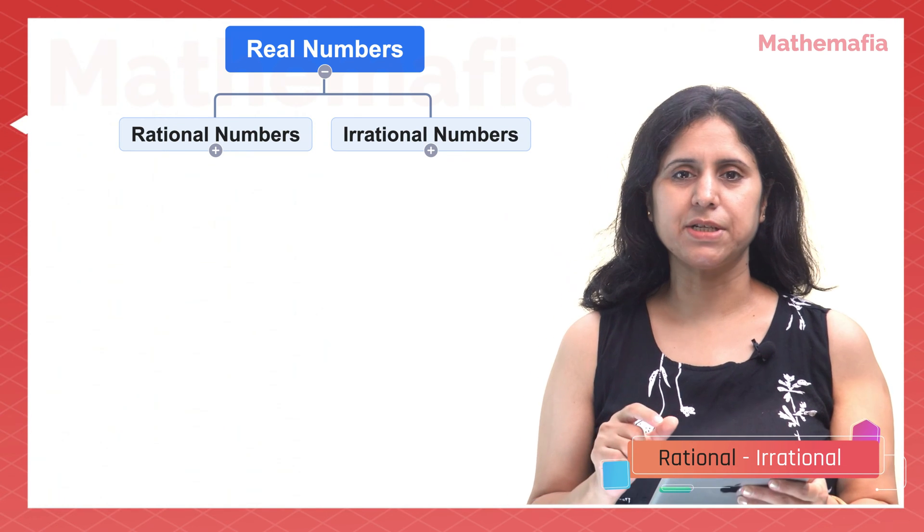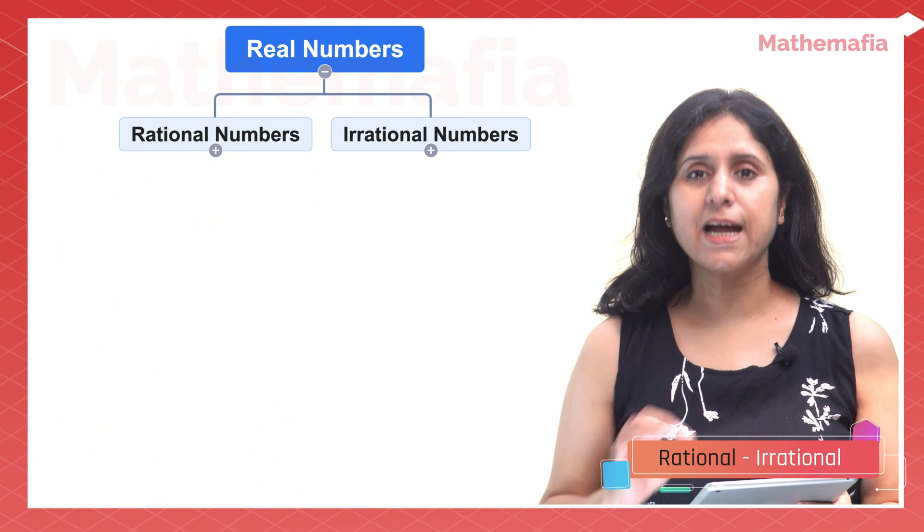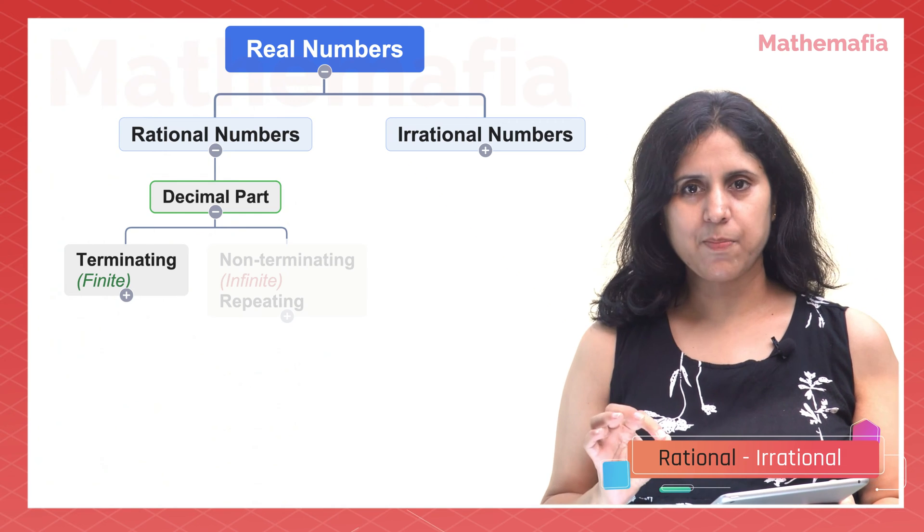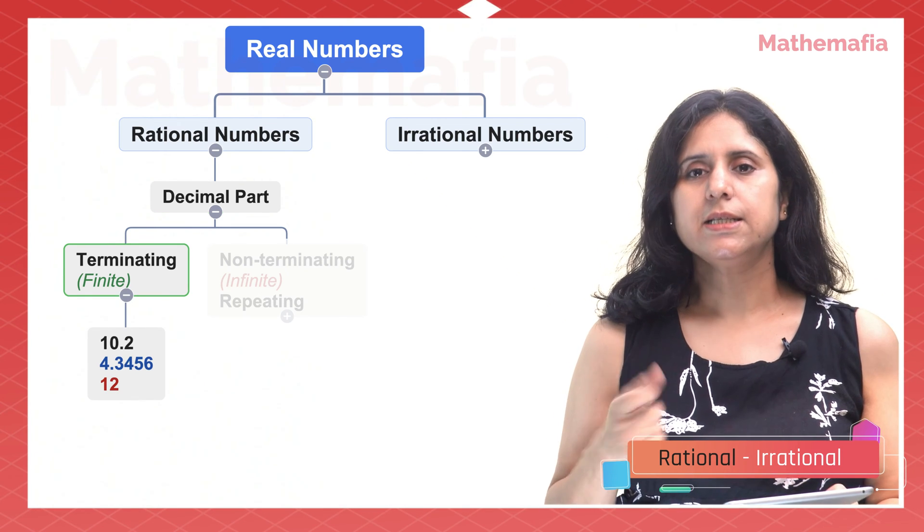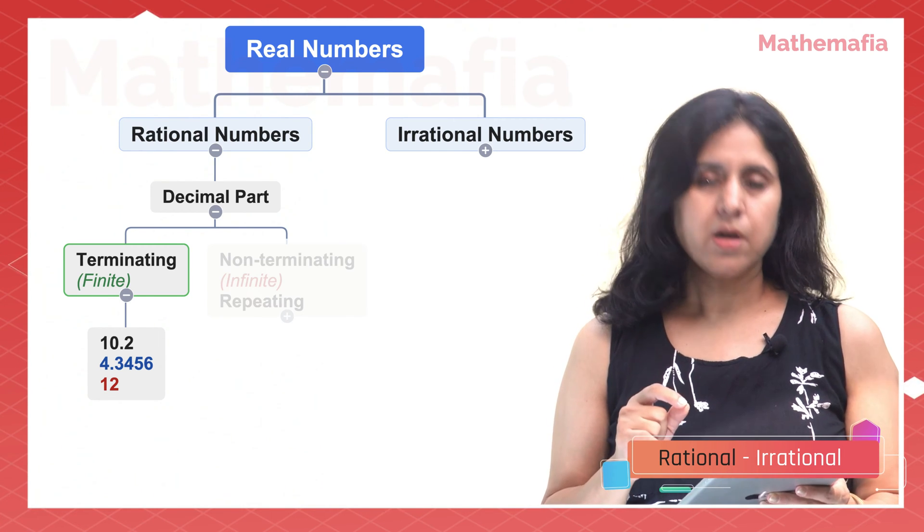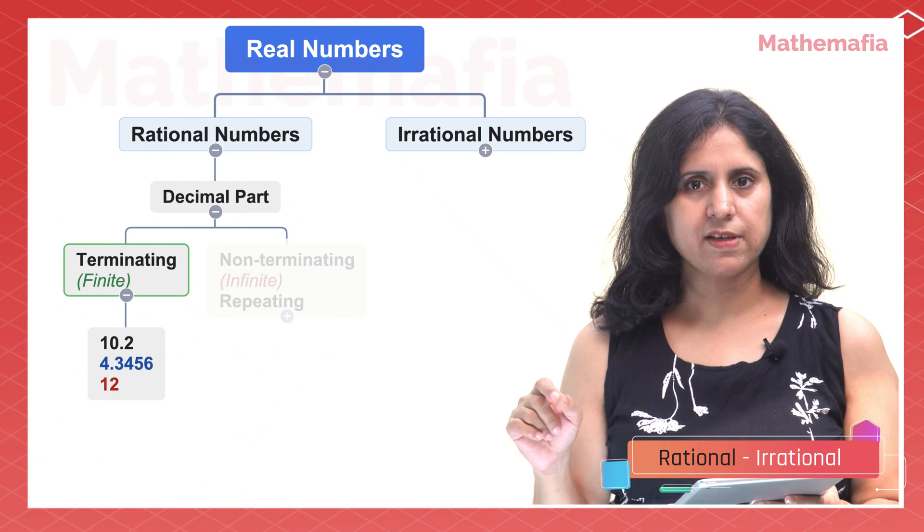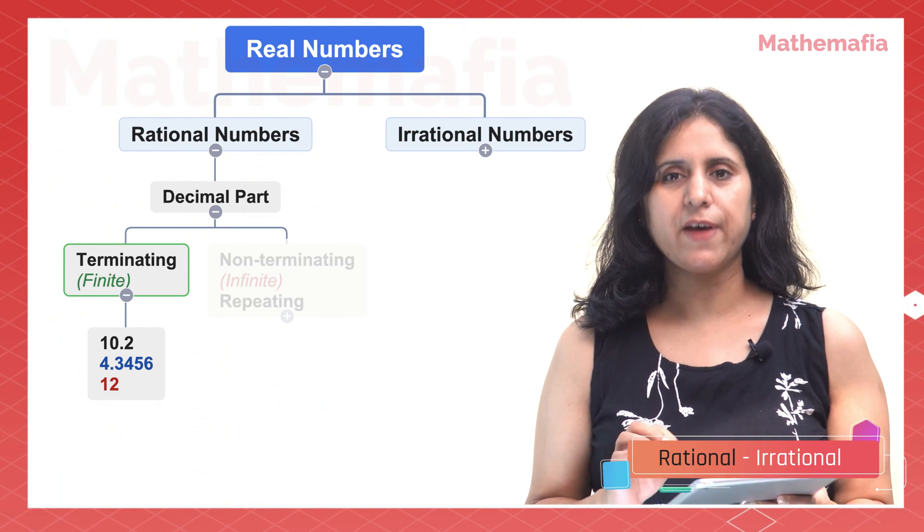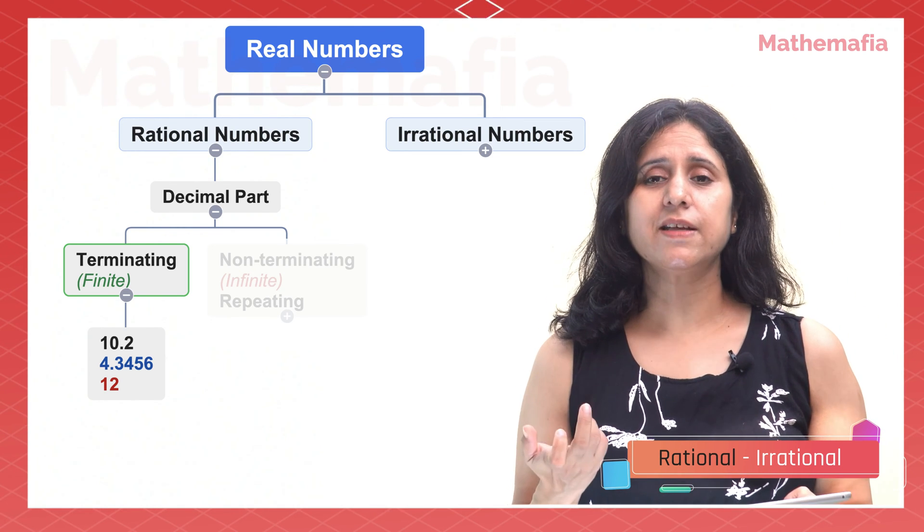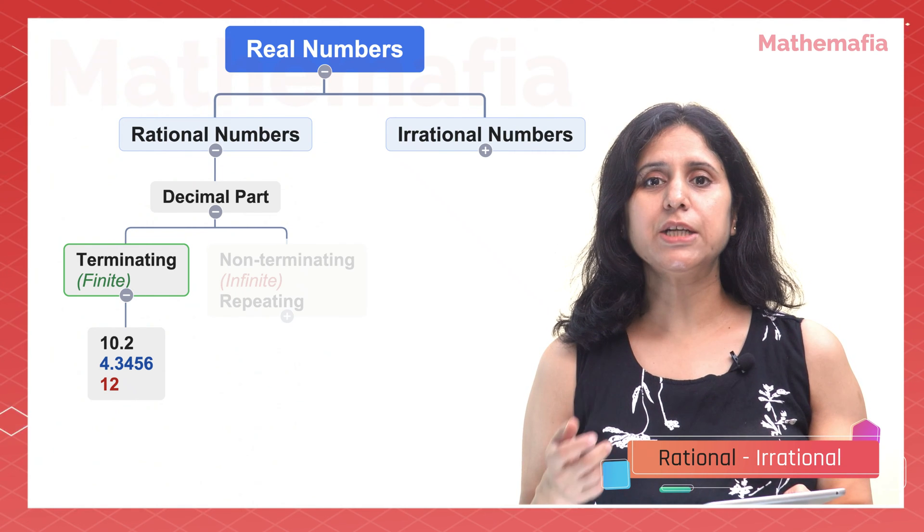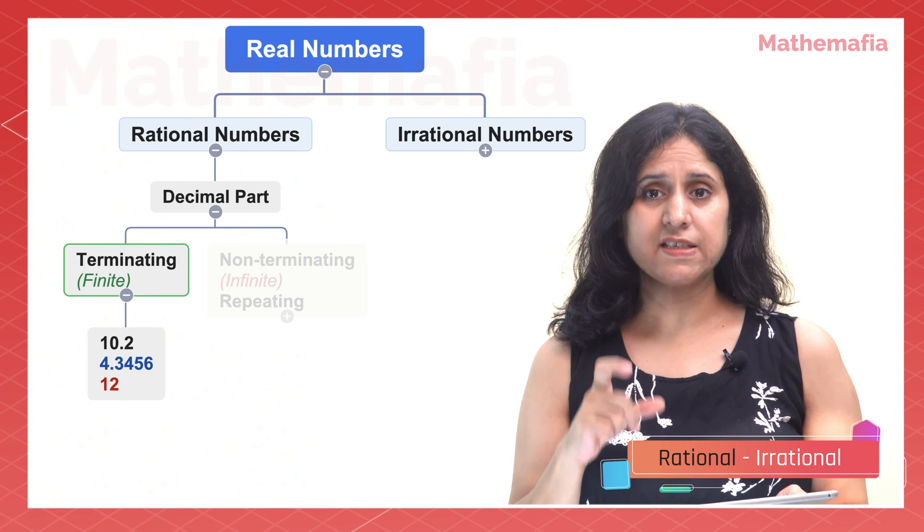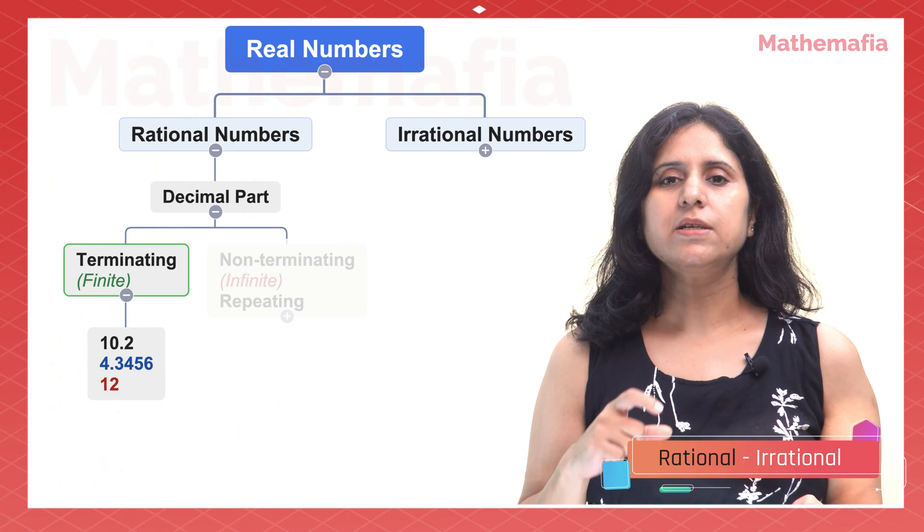First let's talk about rational numbers. A rational number is that real number in which the decimal portion is either finite. For example, 10.2 - the decimal portion has just one digit 2 which is finite, or 4.3456 - in this number the decimal portion is finite with four digits 3456. It's also possible that the decimal portion is zero, for example 12 can be written as 12.0. So all these real numbers where the decimal portion is finite are called rational numbers.